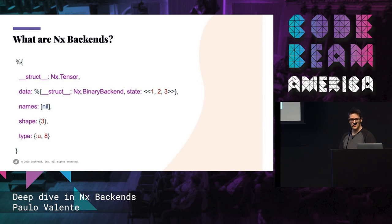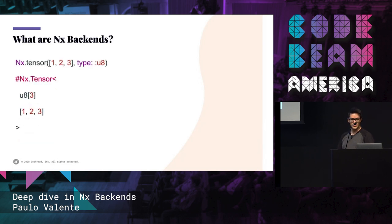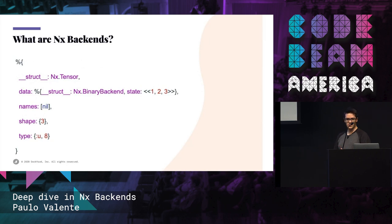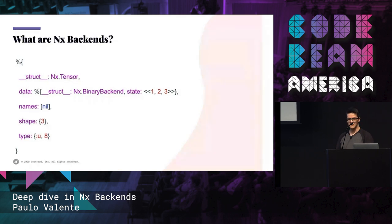So you can see the 1, 2, 3 that we instantiated as a list — you can see it represented in the binary there. There is also other metadata, which is pretty-printed through the inspect protocol. And different backends will have wildly different shapes in the data field, as we'll see a few slides forward.